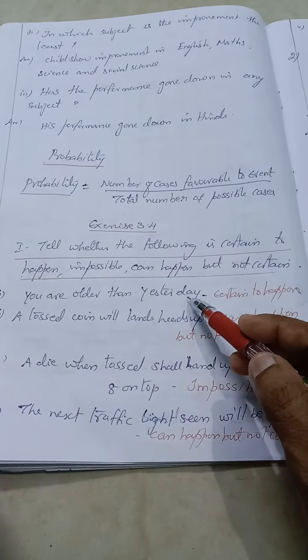Fourth one: the next traffic light signal will be green. When I'm standing at this traffic signal, will next be green? Sometimes it may be, so it can happen but not certain. And fifth one: tomorrow will be a cloudy day. We can't predict whether it will be cloudy or rainy or hot, so this also can happen but not certain.